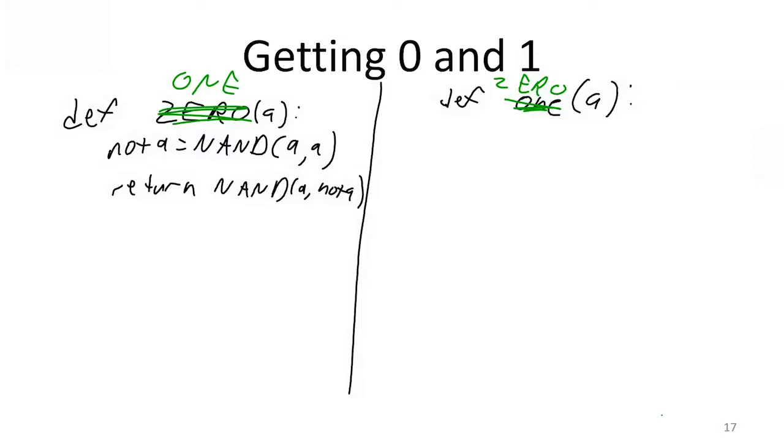So in this case now, we can say that 0, we can have, well, 1 is going to be equal to 1 of A. And then we can, for instance, RETURN NAND of 1 with 1.